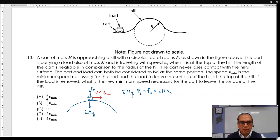However, if the minimum speed happens when the car can just leave the surface, it means that at the minimum, the normal force is going to be zero, because the cart is going to lose contact with the ground.